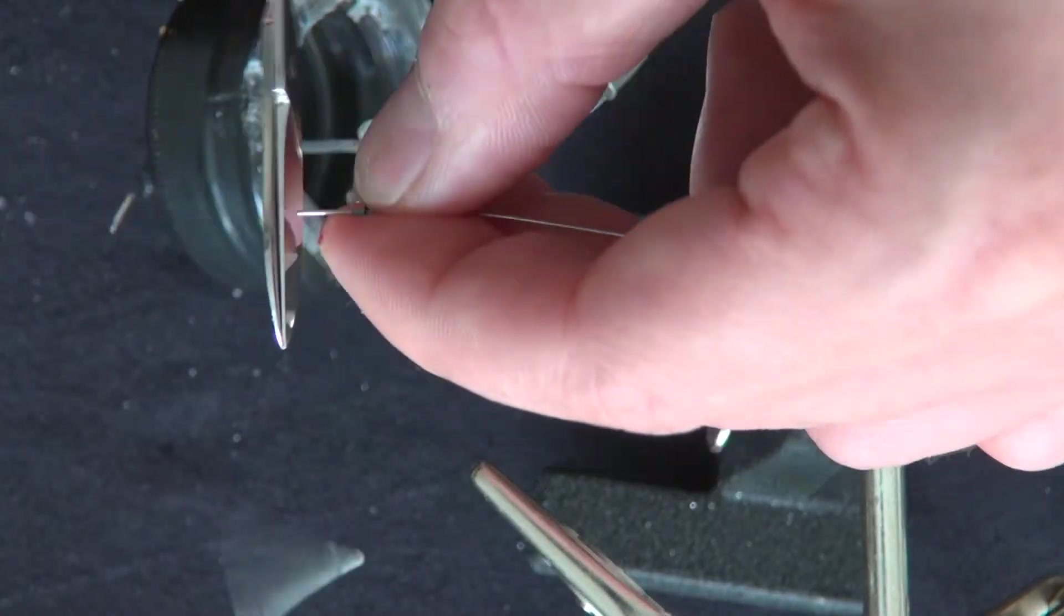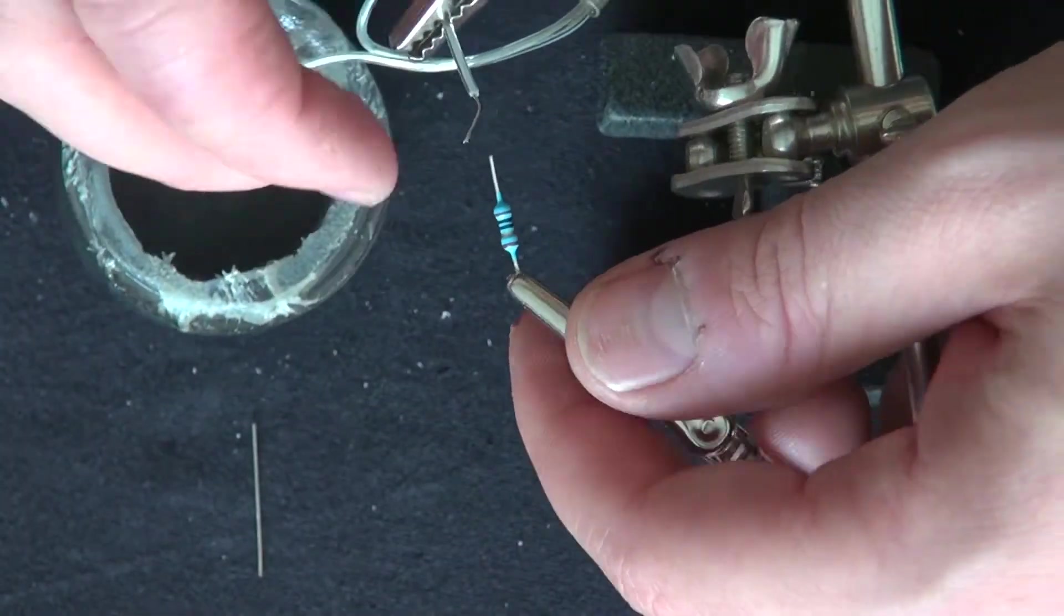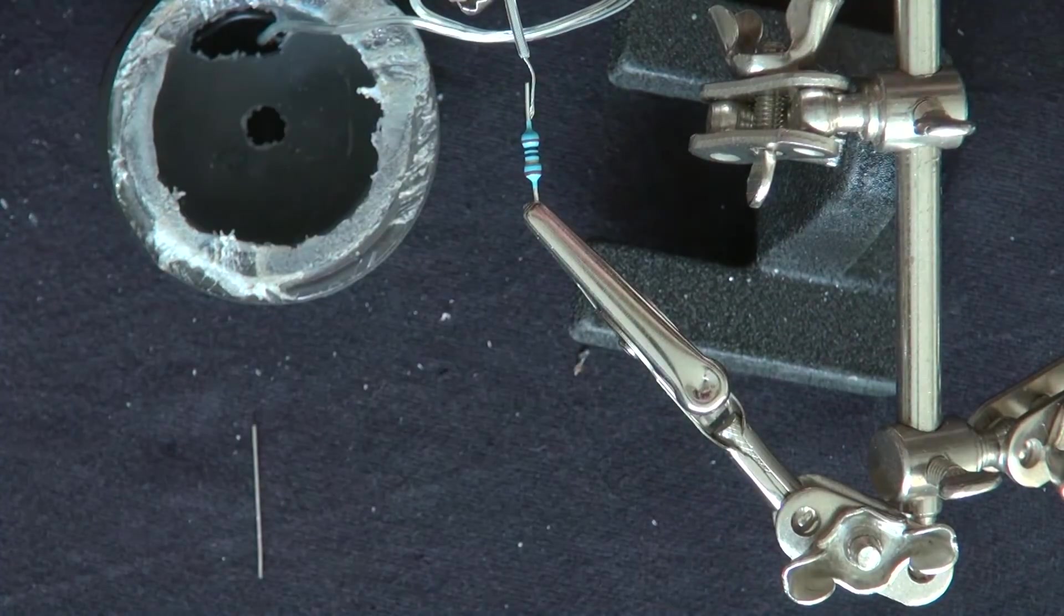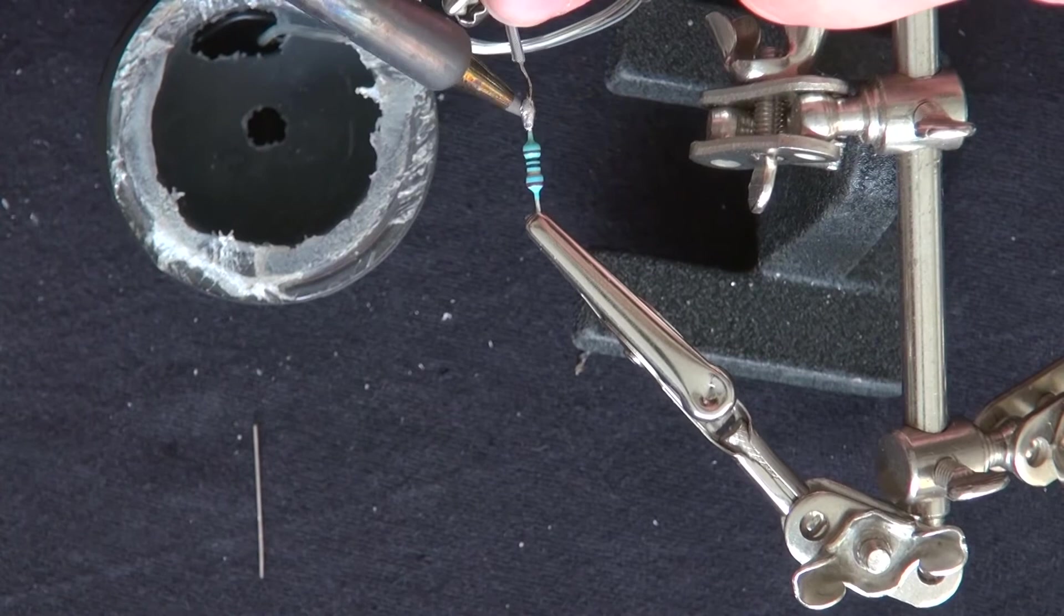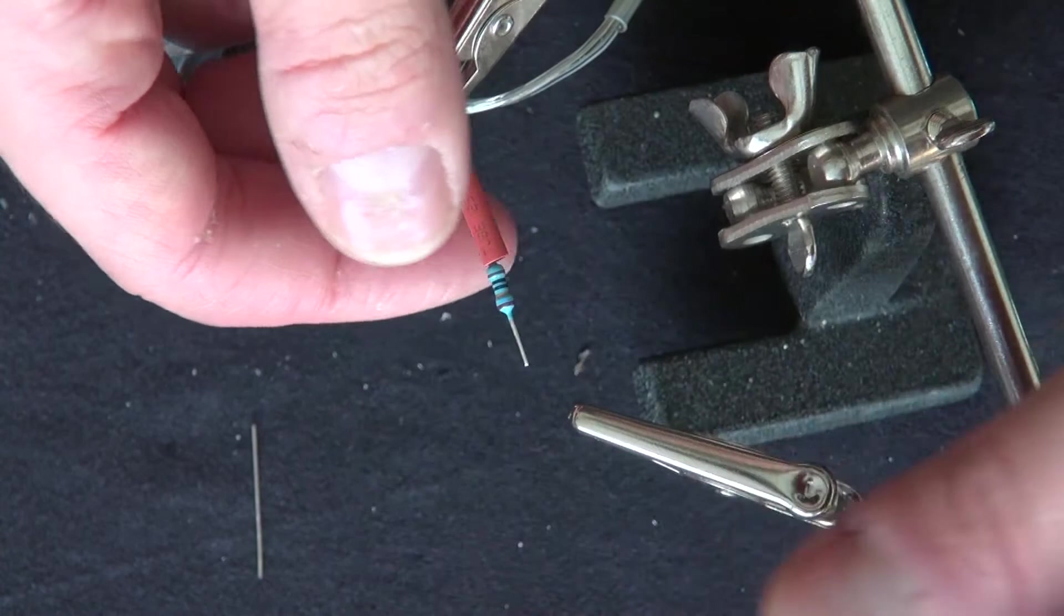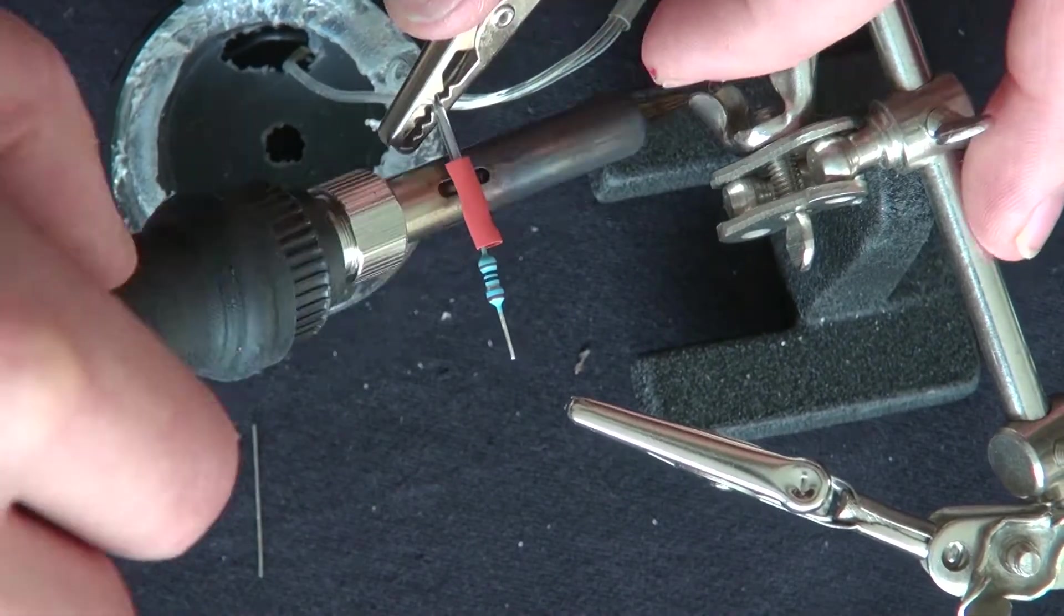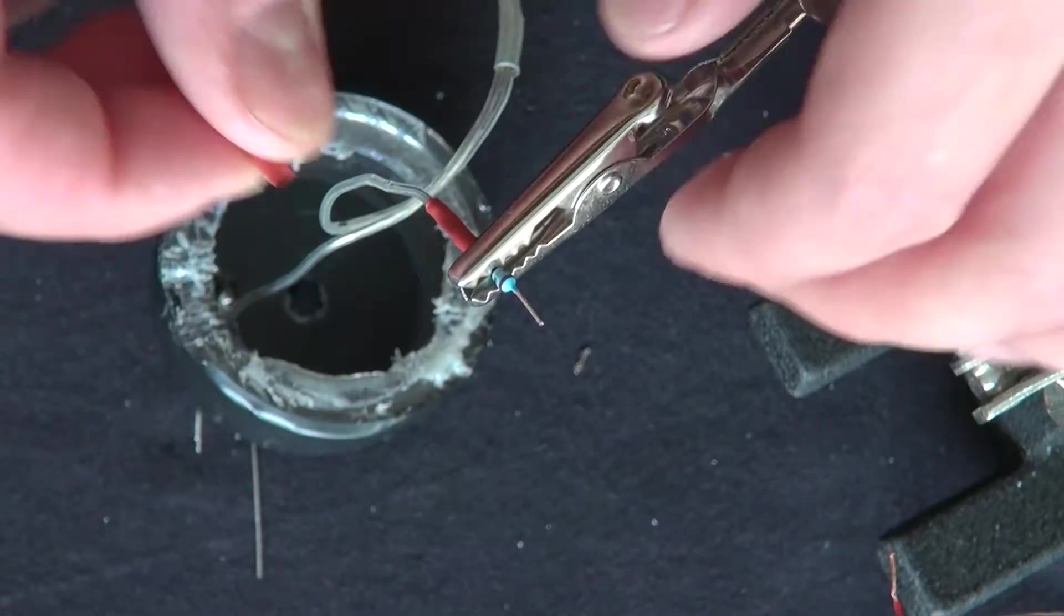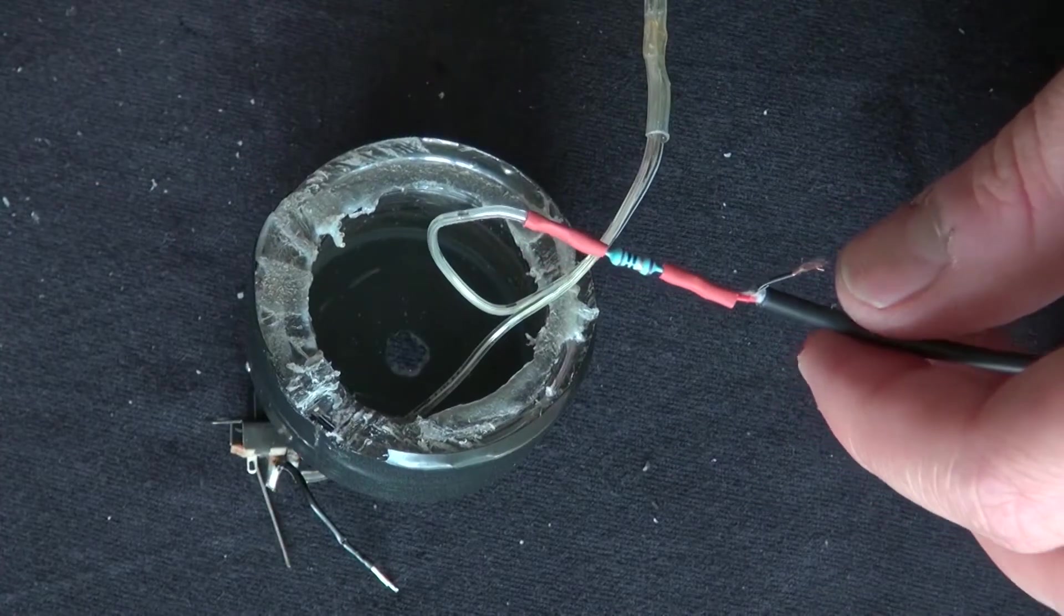Snip off the excess and now I have my 10 ohm resistor. Shorten the leads and I'm going to go ahead and solder those the positive wire onto the positive wire. Put a shrink tube on it so that way it keeps everything insulated. I'm going to go ahead and melt the shrink tube. Now I'm going to solder the positive wire and put a shrink tube on it as well.